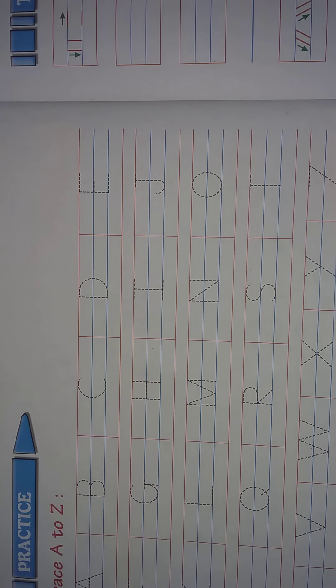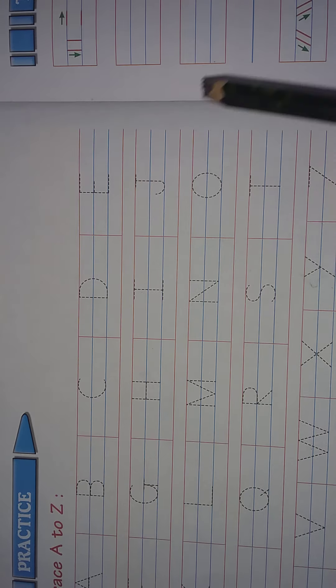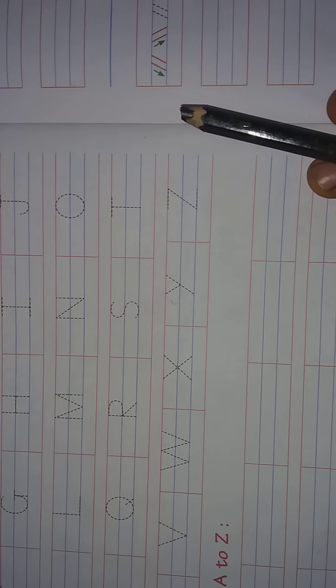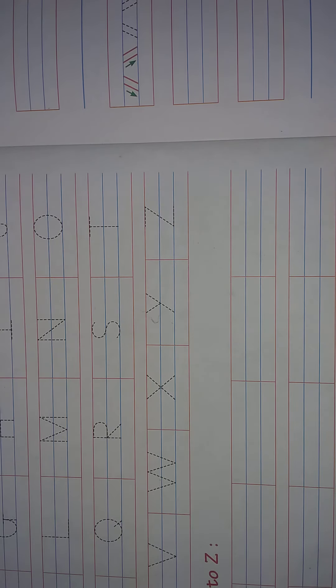See, children? You have learned from A to Z. Here, what you should do? You should trace here. You should trace here. You should trace A to Z. Okay, children?